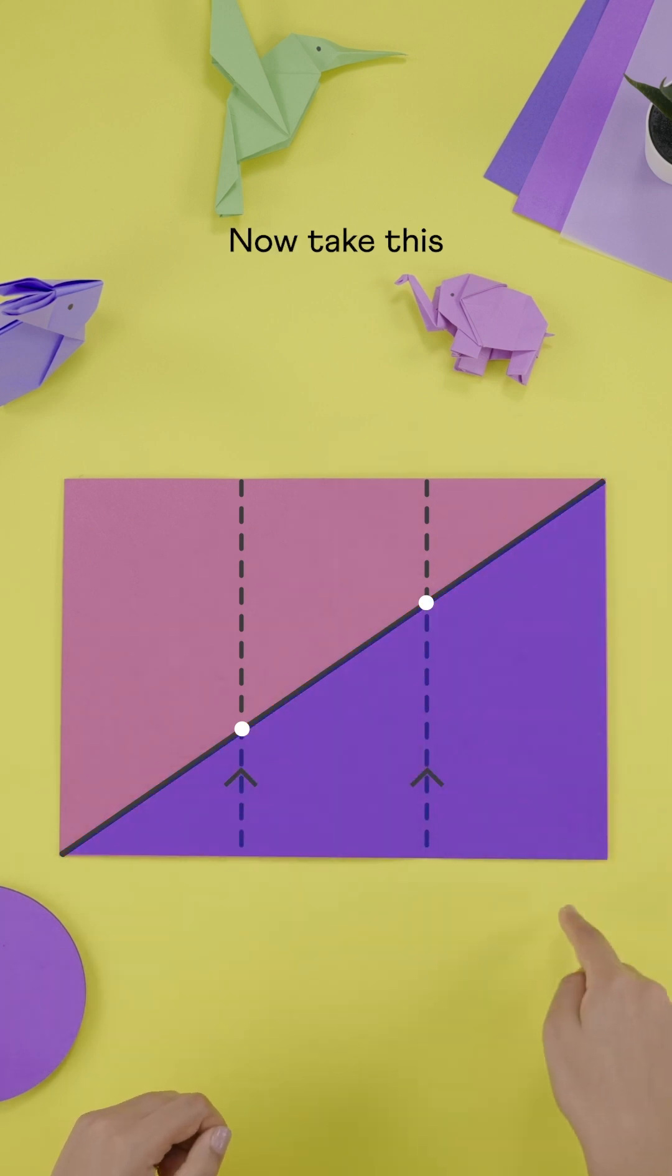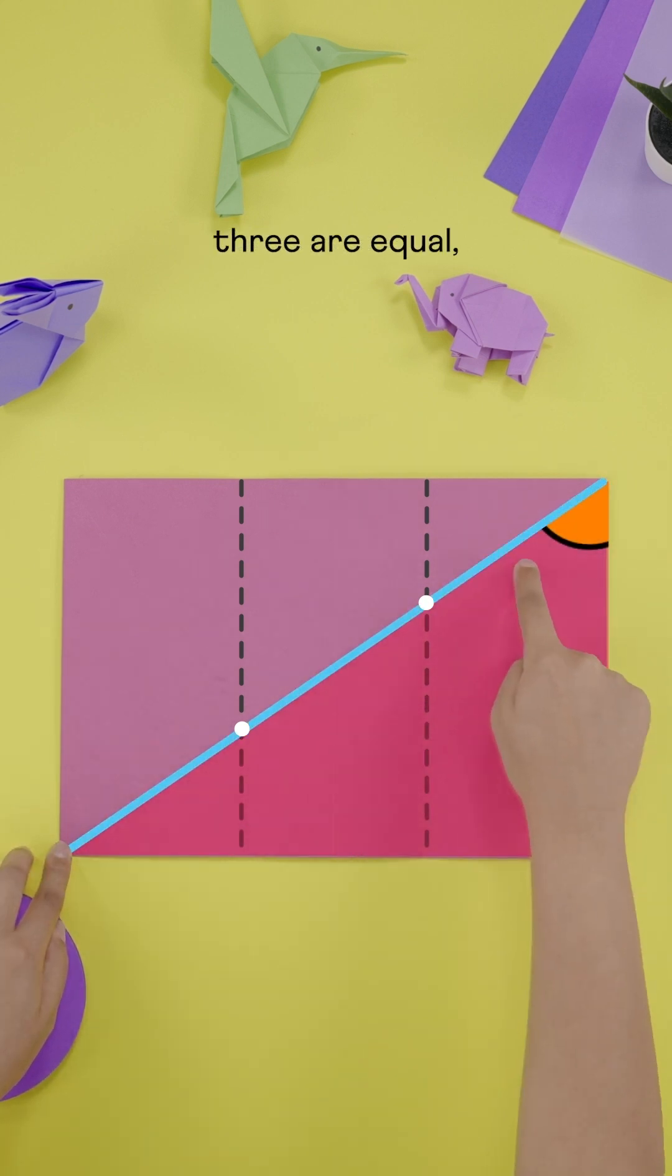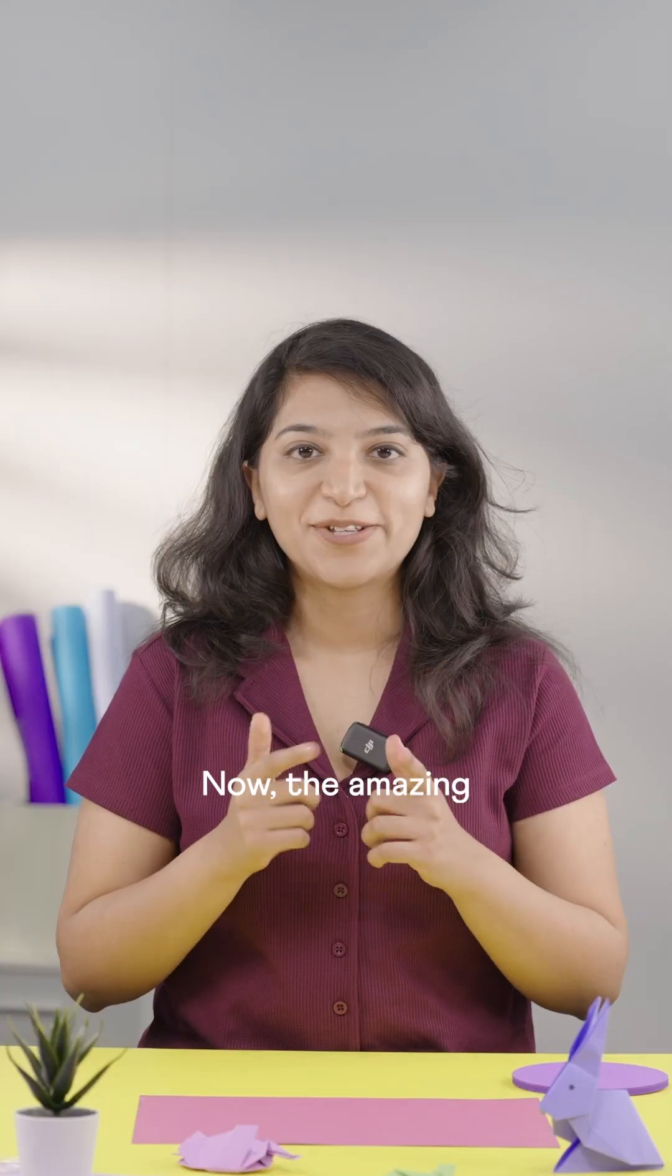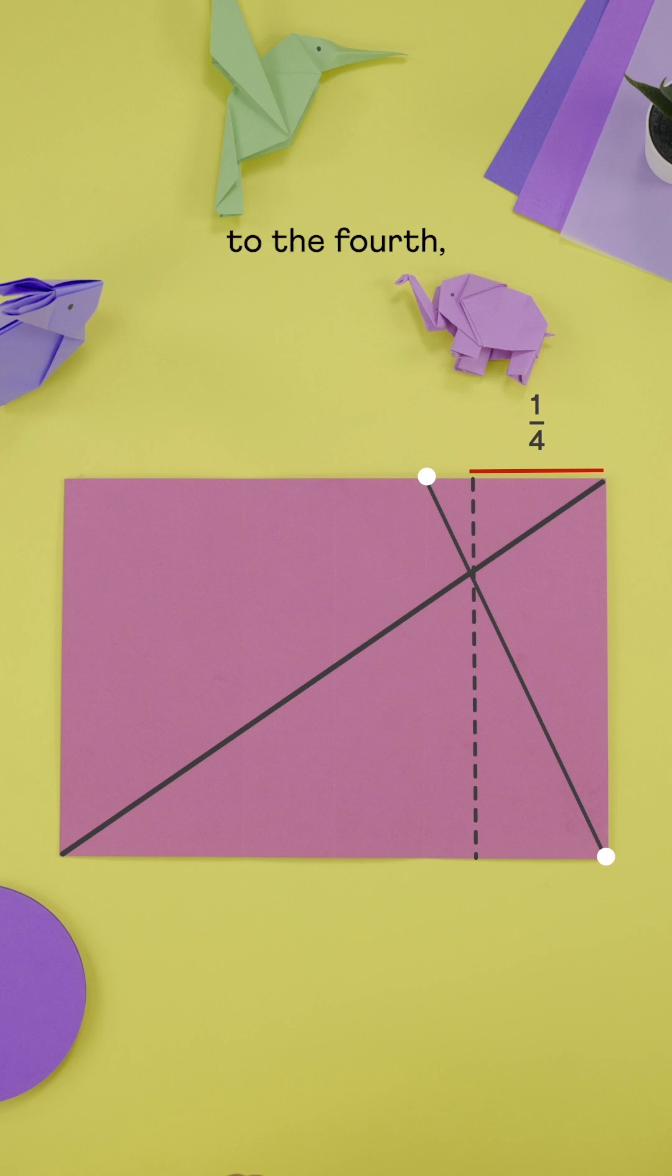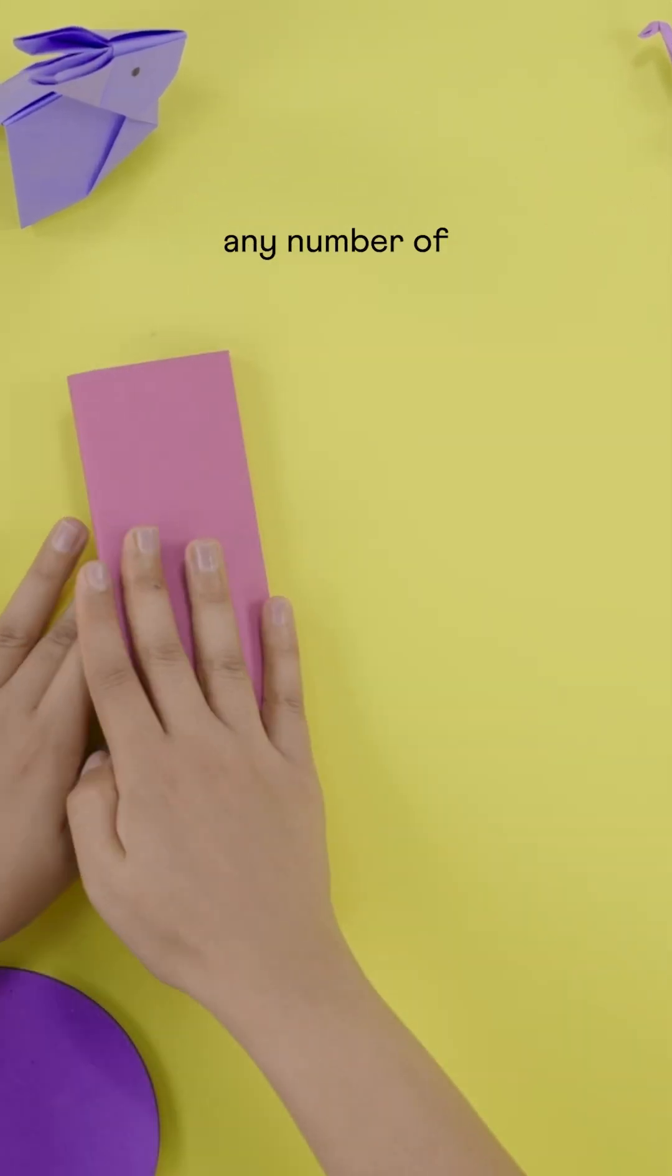Now take this big triangle. Since these three are equal, these three are also equal. Now the amazing thing is you can join this corner to the third to mark the fourth and then to the fourth to mark the fifth. This way you can fold the paper in any number of equal parts.